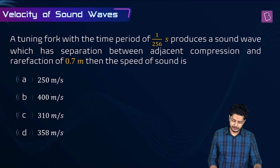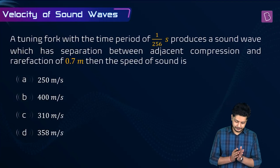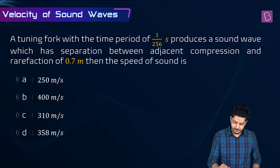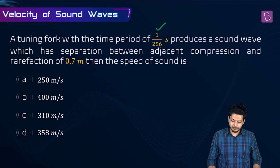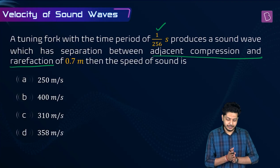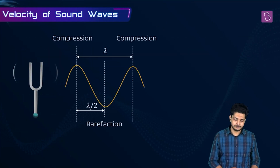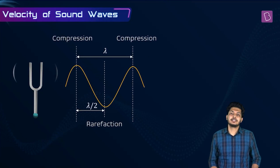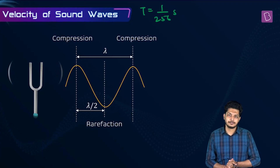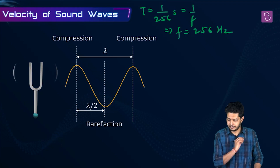A tuning fork with a time period of 1/256 seconds produces a sound wave with a separation between adjacent compression and rarefaction of 0.7 meters. We need to find the speed of sound. Since T equals 1/256 s, the frequency F equals 256 Hz.